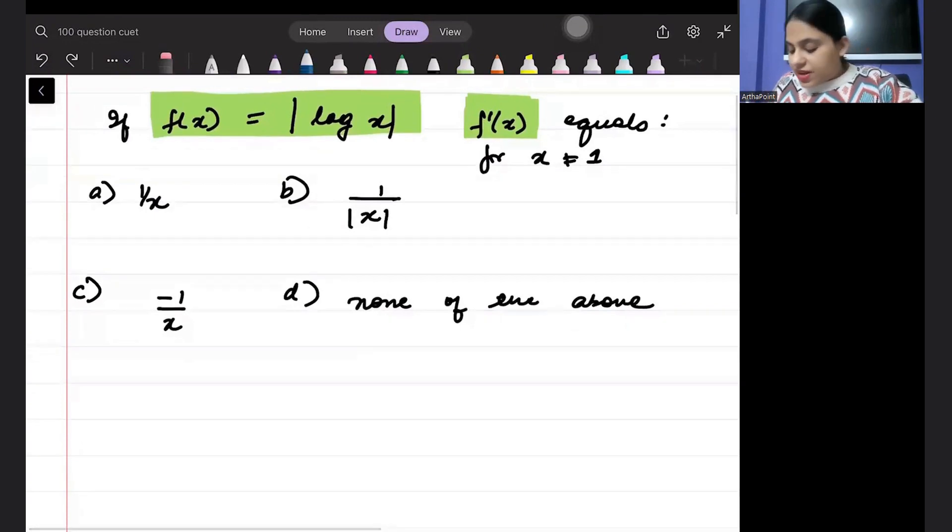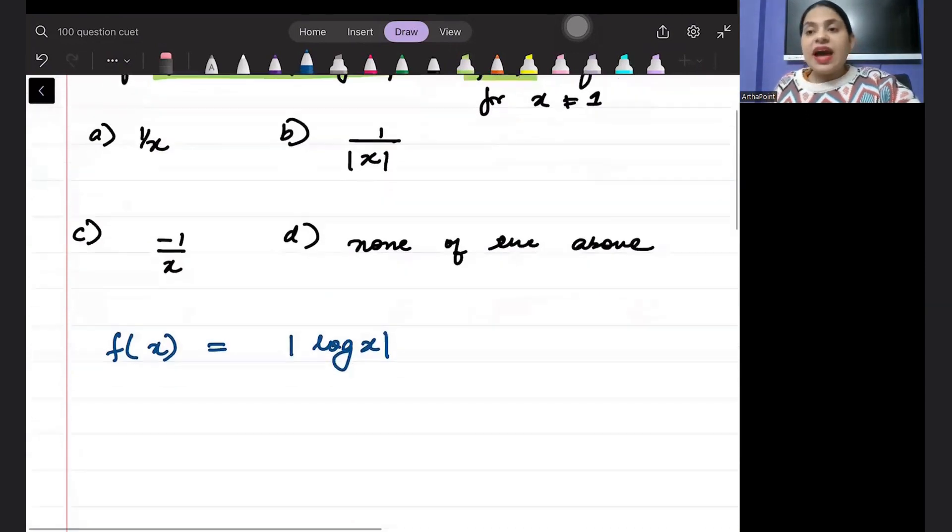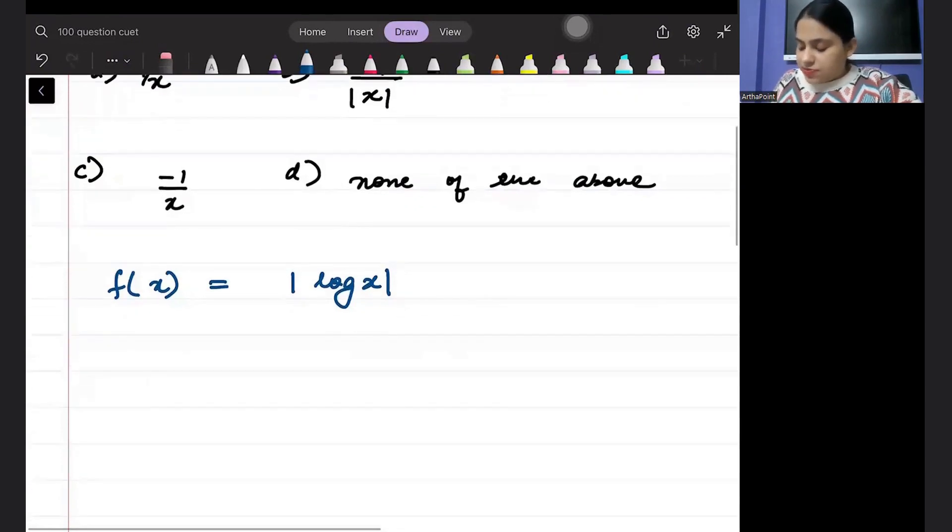Let's see beta. When I say that f(x) is mod of log x, then I can go ahead and open this up first. So it is going to be either log x or minus log x.